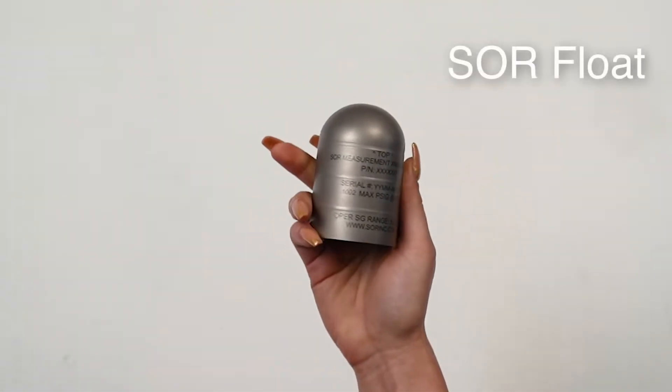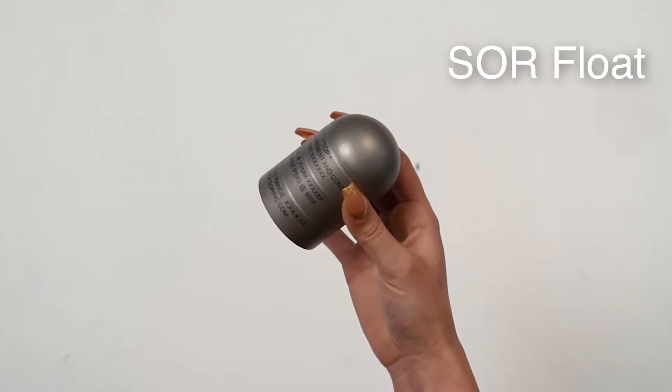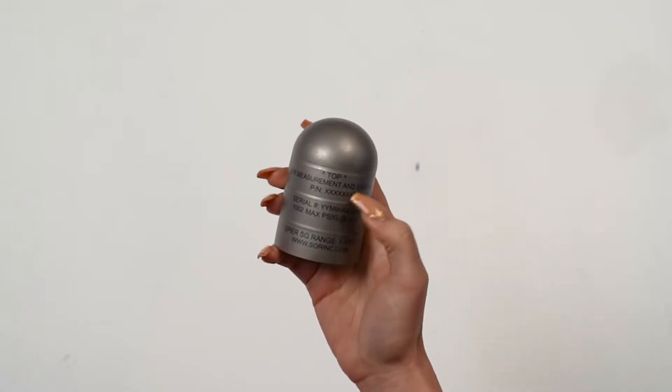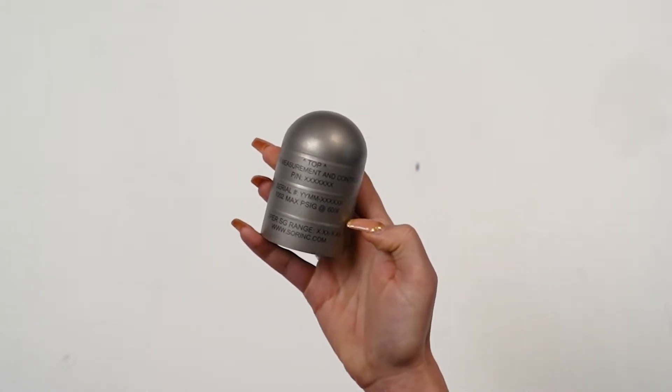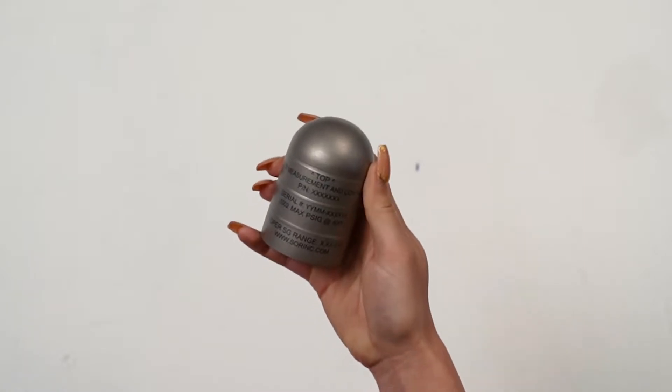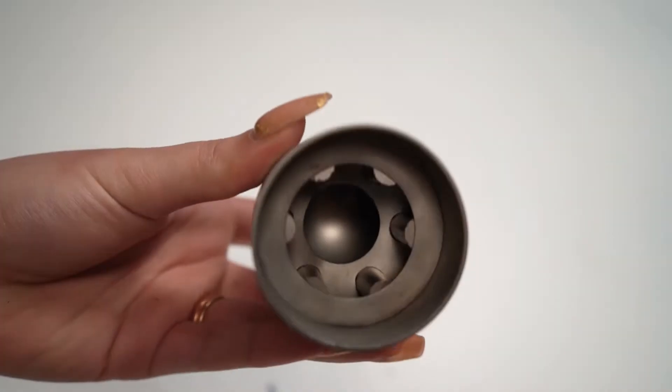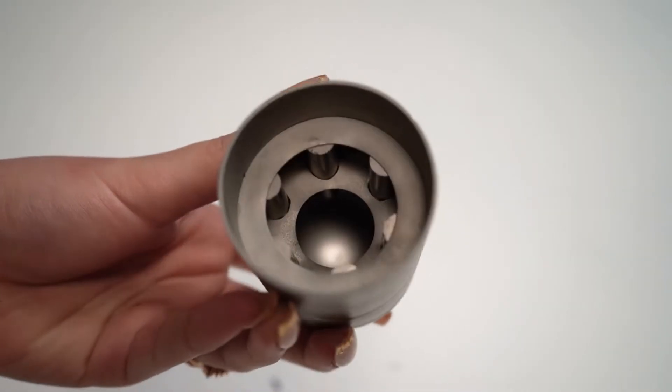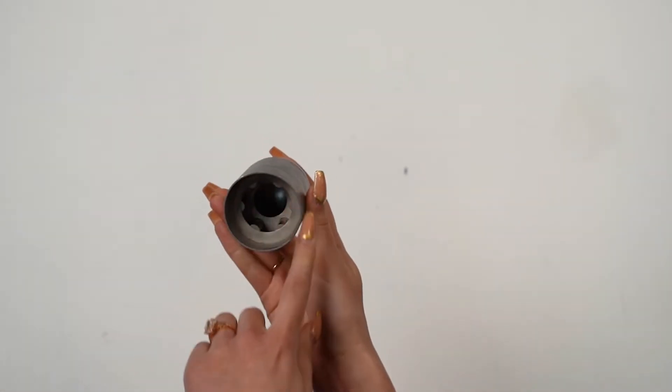The SOR float is uniquely designed for each application using the process pressure, temperature, and specific gravity. These conditions along with the serial number are engraved on the float so it's easy to track its origin. The SOR float uses a gun belt style magnet design to ensure a strong consistent magnetic field.